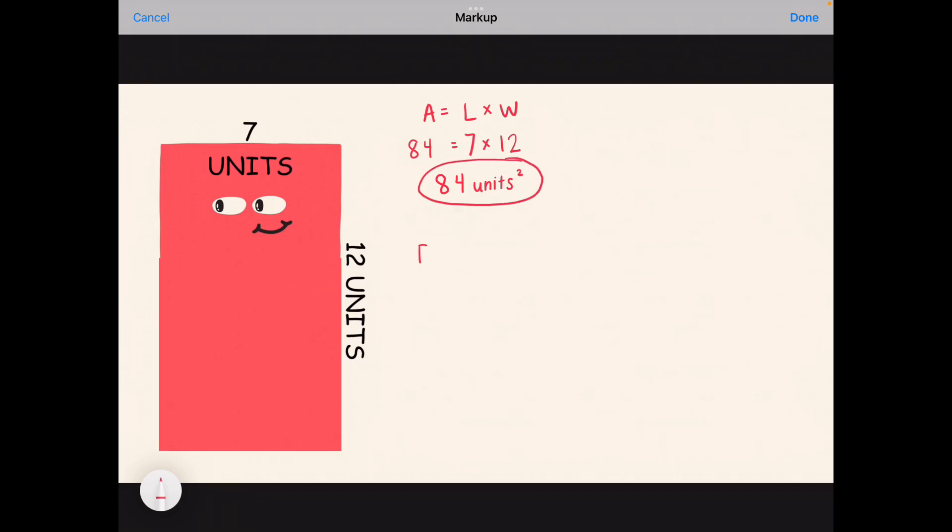For perimeter, let's try out the other formula. For this one, we just have to do length plus width, and then just multiply that by 2, because there's two lengths and there's two widths. So I'm going to plug in my 7 for my length, my 12 for my width. I've got to add those together first because they're in parentheses.